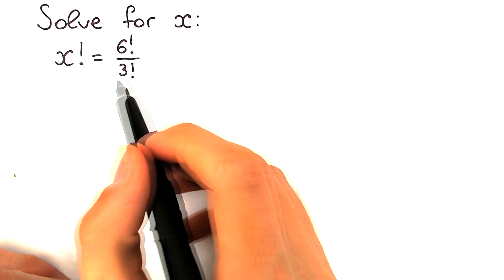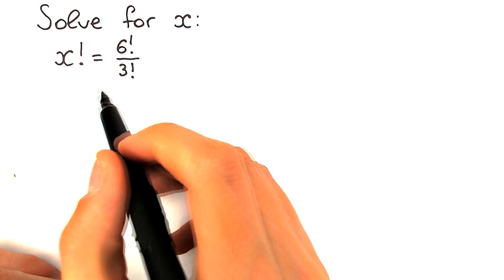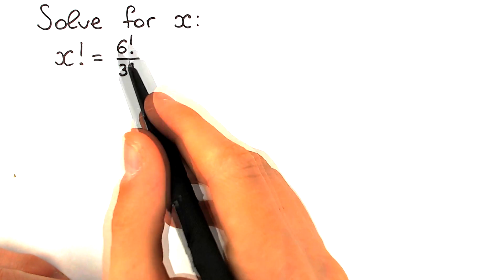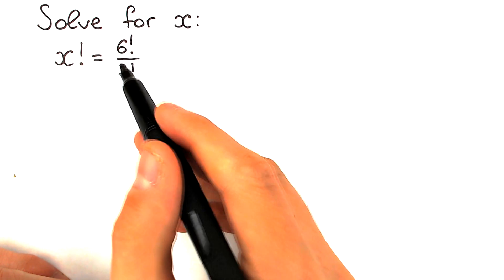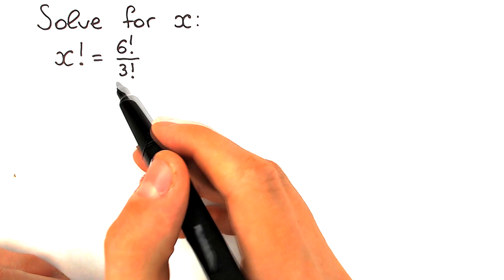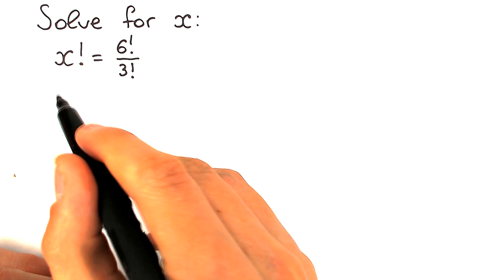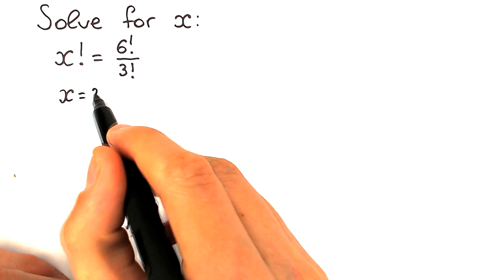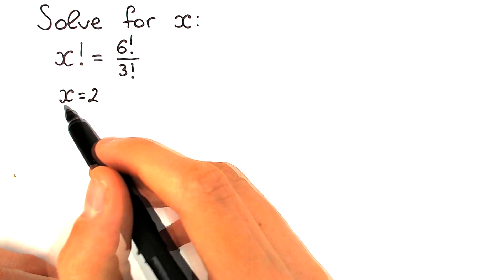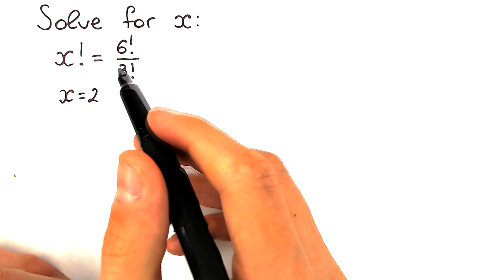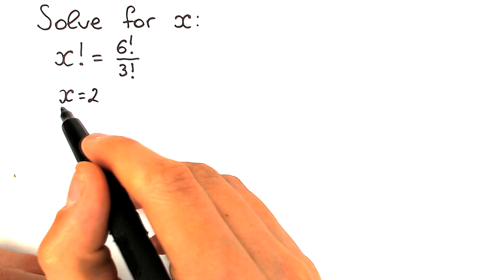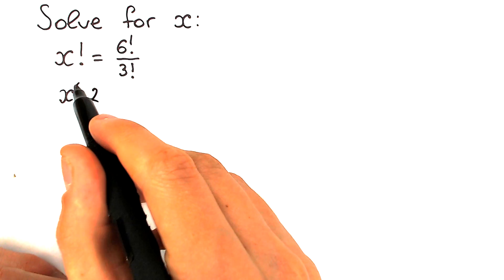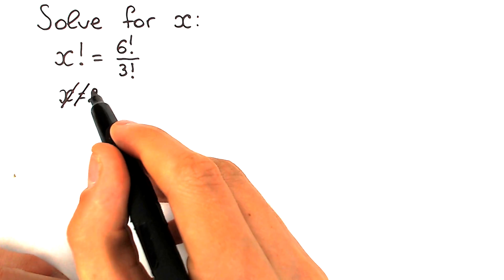So first of all, here's our challenge. One group of students solves this question like that: they say, let's cancel the 6 and 3 — we know that 6 divided by 3 equals 2 — so they say x equals 2. This is the most common mistake right here, and this is a very bad solution. Forget about this.